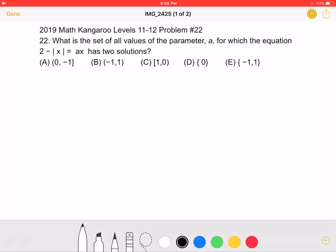This is the 2019 Math Kangaroo Levels 11-12, problem number 22. What is the set of all values of the parameter A for which the equation 2 minus absolute value of x equals Ax has two solutions?